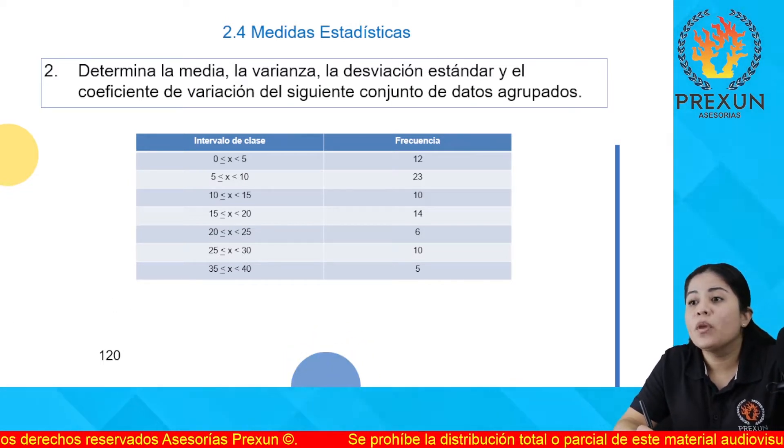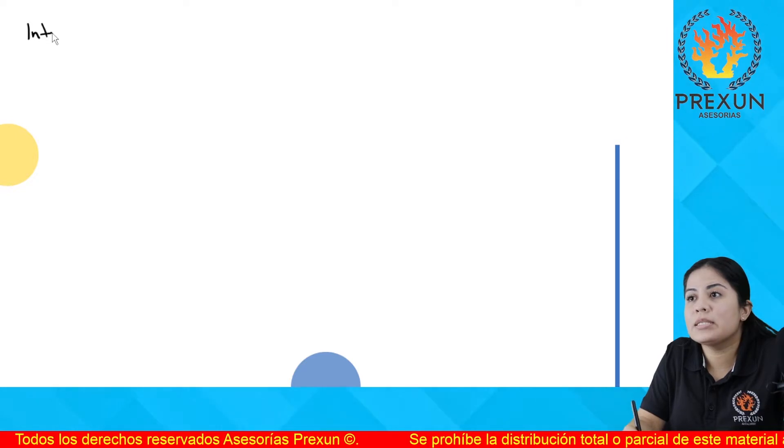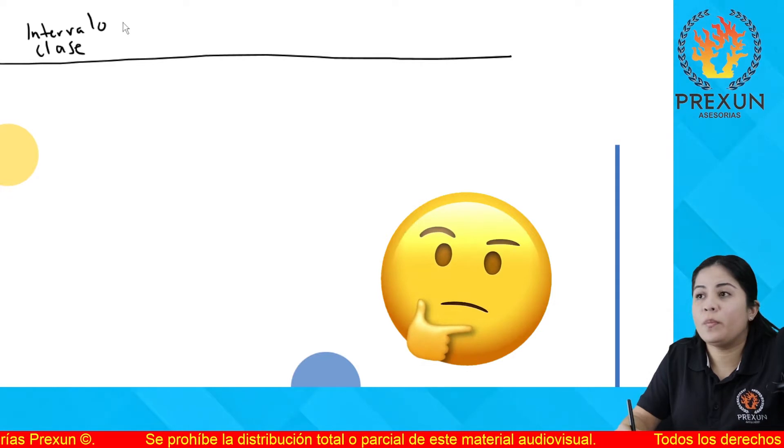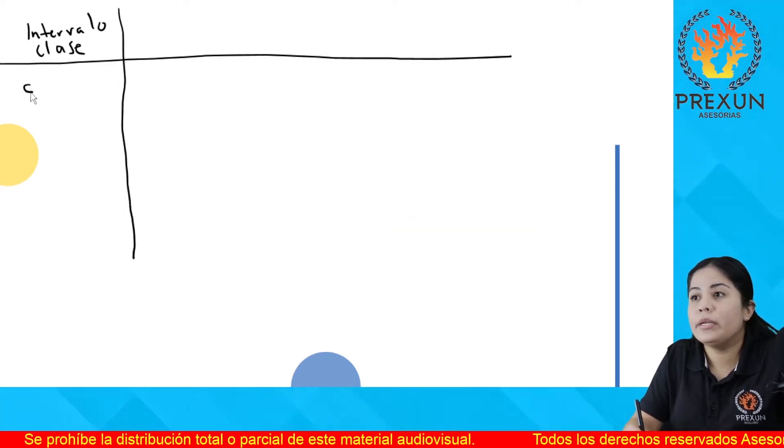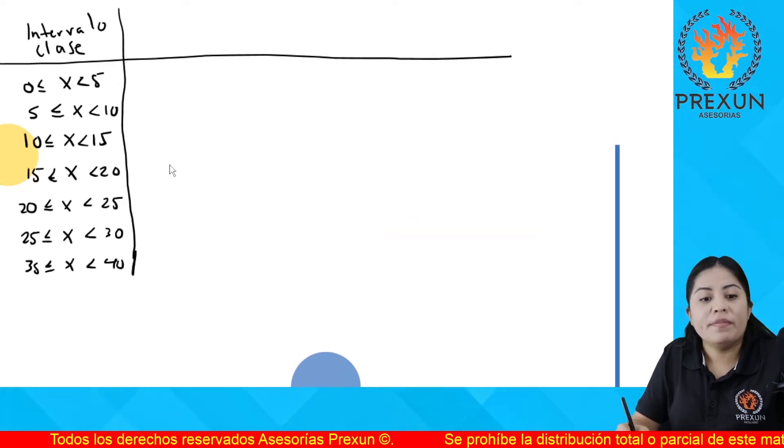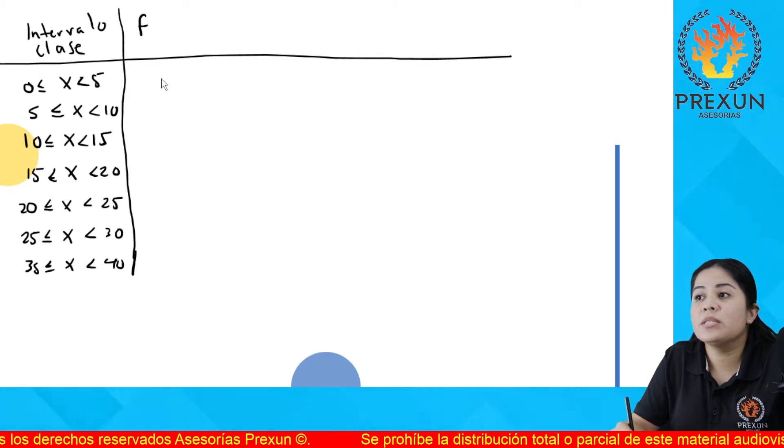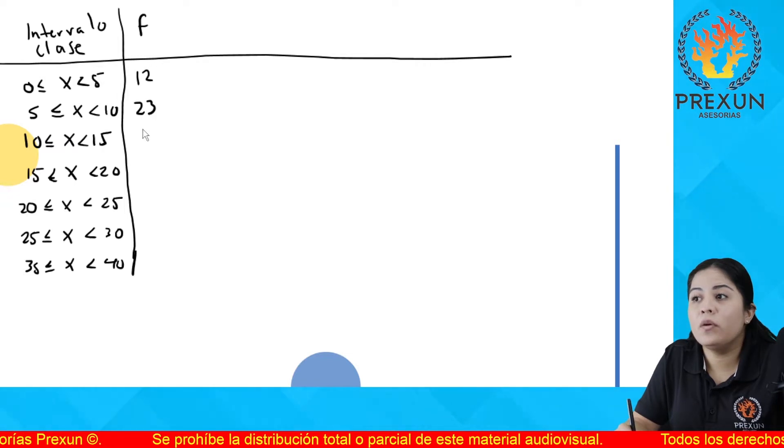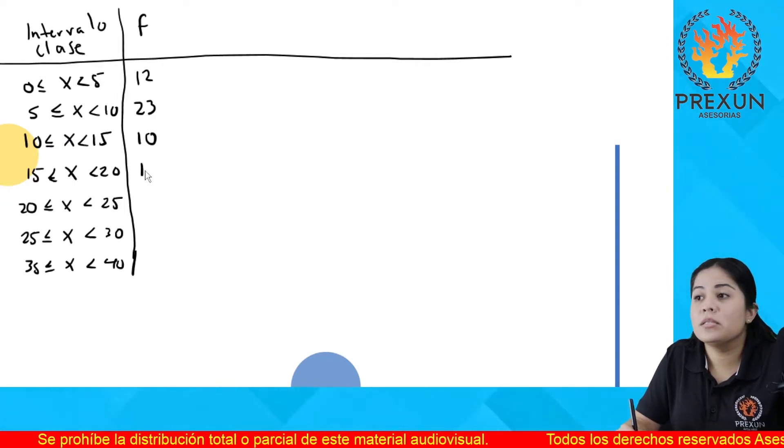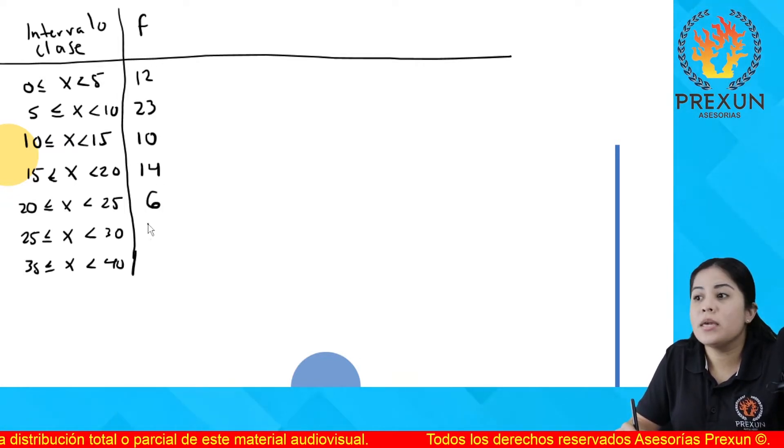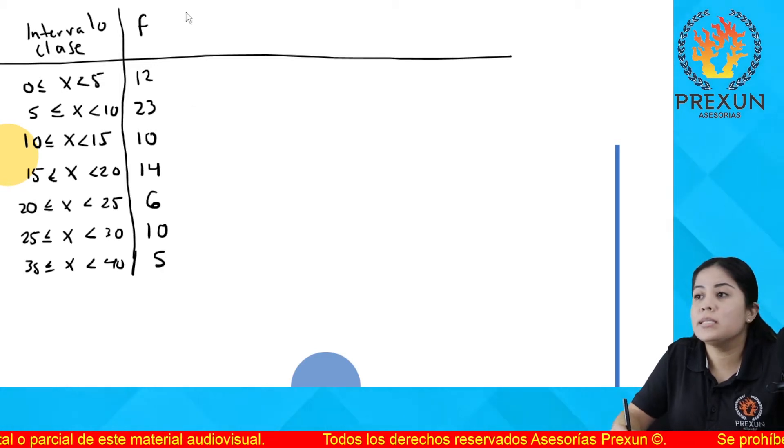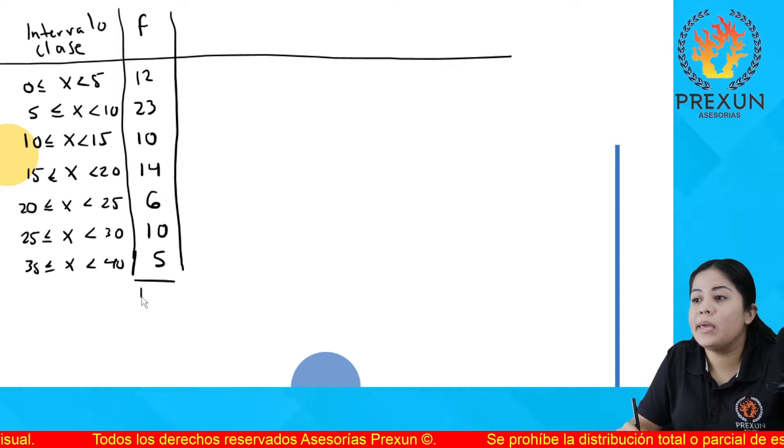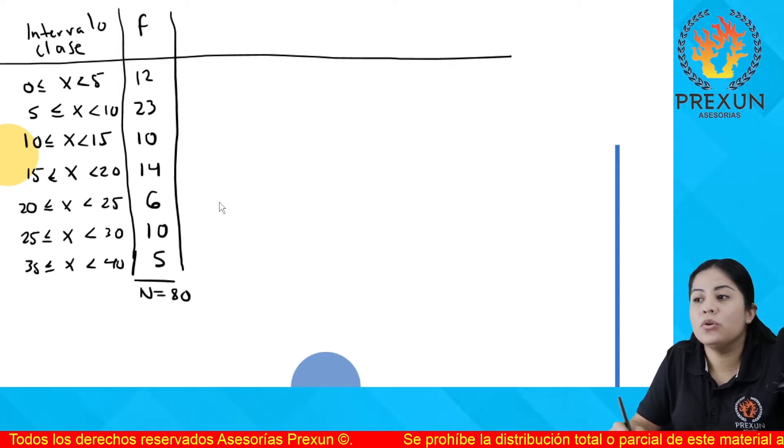Para esto vamos a colocar lo que nos estaban dando para poder determinar todos los conceptos que nos pedían. Aquí vamos a poner lo que nos daban. Nos están dando la frecuencia que lo vamos a representar con F. Aquí habían 12, 23, 10, 14, 6, 10 y 5. Sumando las frecuencias, tenemos un total de datos que n es igual a 80.